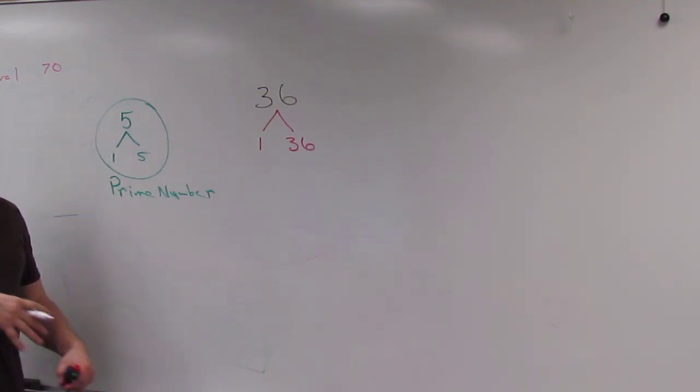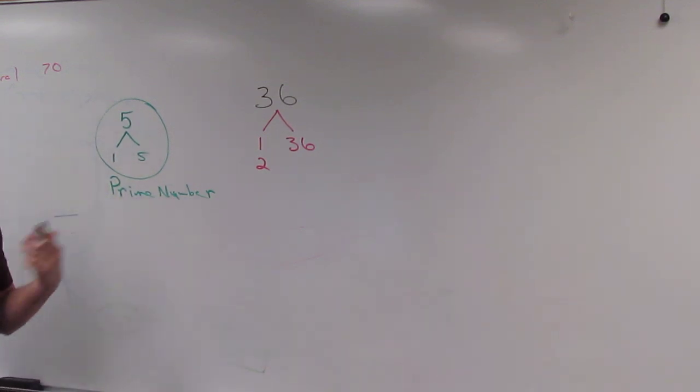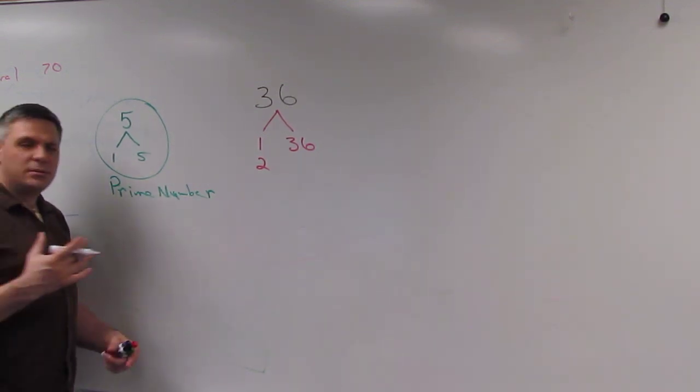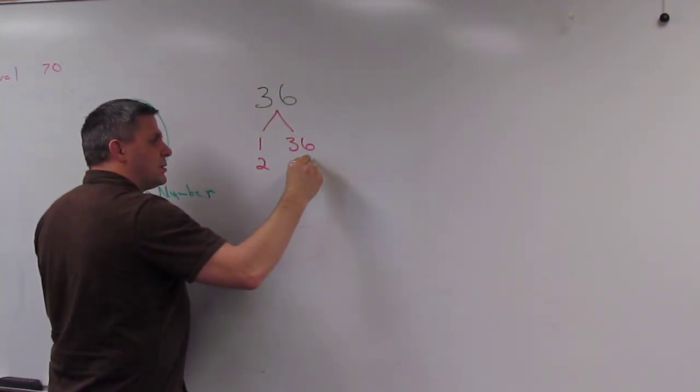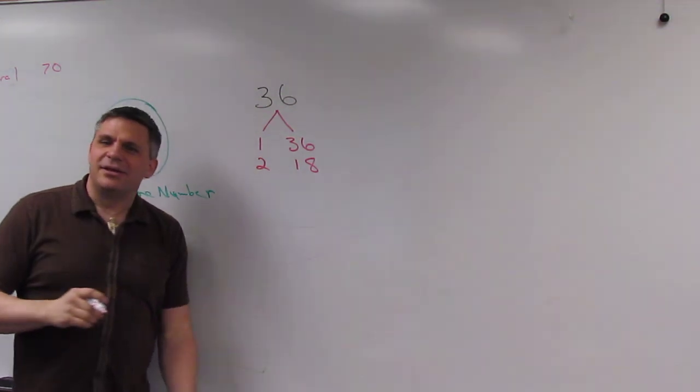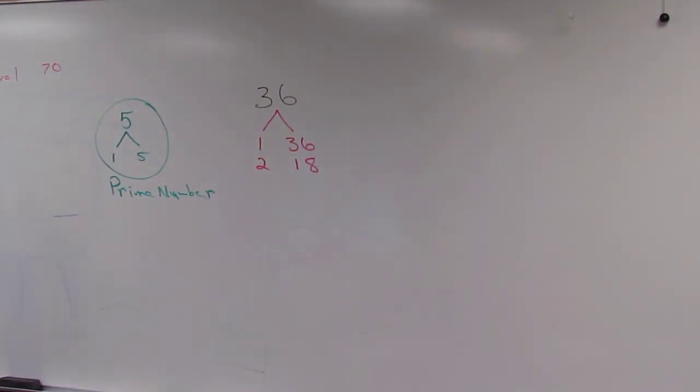And now we say, is 36 divisible by 2? Yes. So then, 2 times what is 36? Close. I heard 13, but 18, right? Because we forgot there's a 3 there.